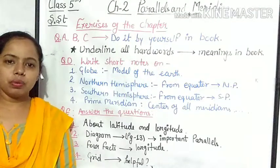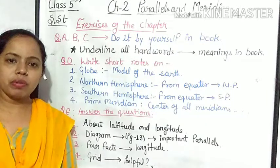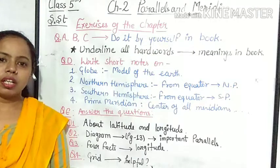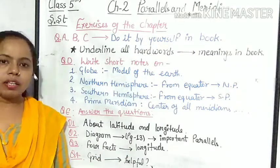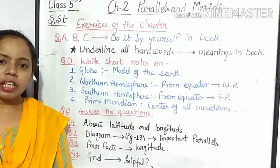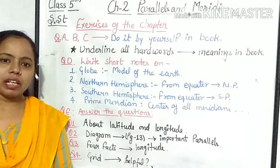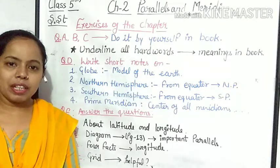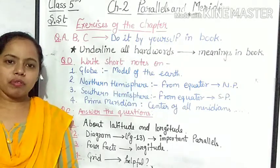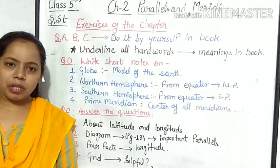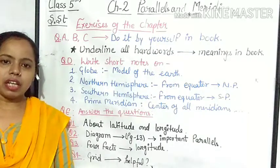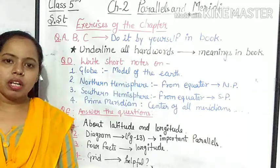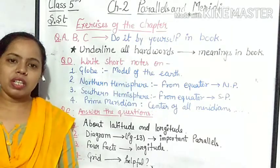Now come on to question number 2. In this question, we have to show important parallel lines with the help of a diagram. If you see in your book on page number 30, you can see the diagram that shows the important parallel lines. We have 5 important parallel lines including the equator: equator, Tropic of Cancer, Tropic of Capricorn, Arctic Circle, and Antarctic Circle. You can draw that diagram in your copy.